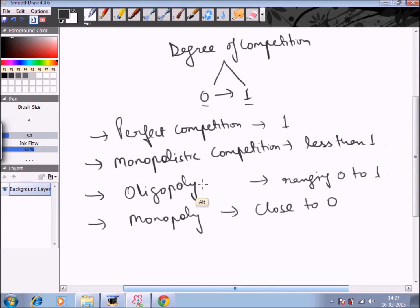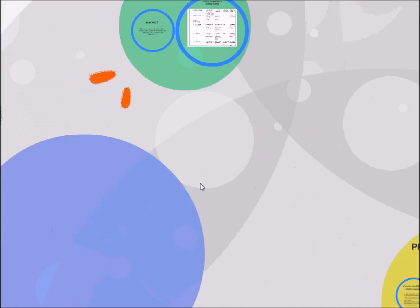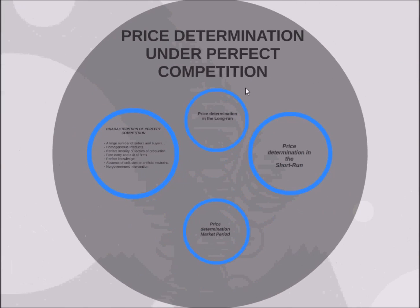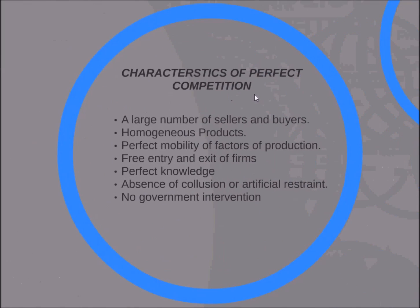Now we come to price and output determination in various types of market, starting with perfect competition. Perfect competition is a situation where there are large numbers of buyers and sellers selling homogeneous products. First characteristic: large number of sellers and buyers, so neither can influence the price. Second: homogeneous products, meaning products are perfect substitutes — the buyer does not care from which seller they buy.